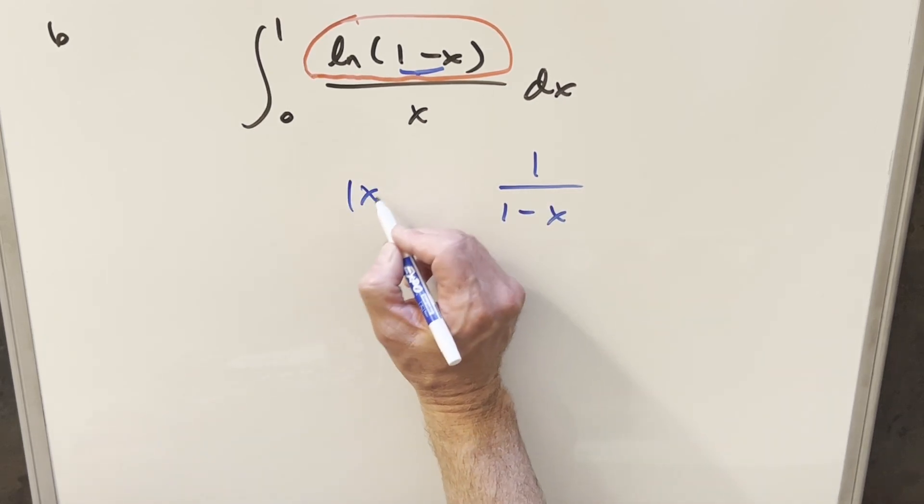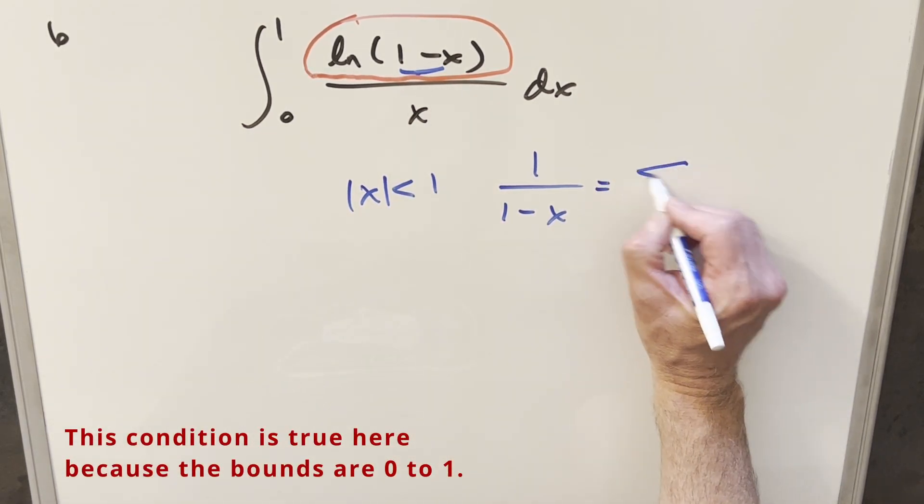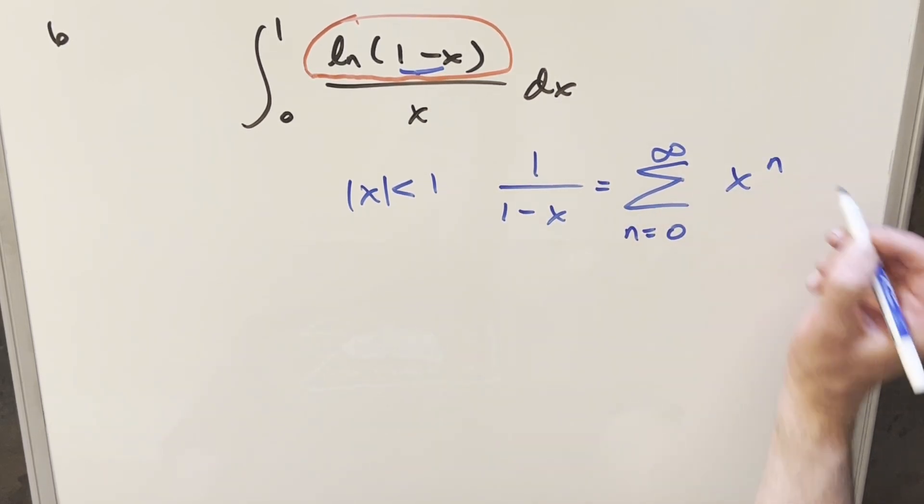assuming that the absolute value of x is less than one in order for this to converge, this is actually the same thing as the sum from n equals zero to infinity of x to the n.